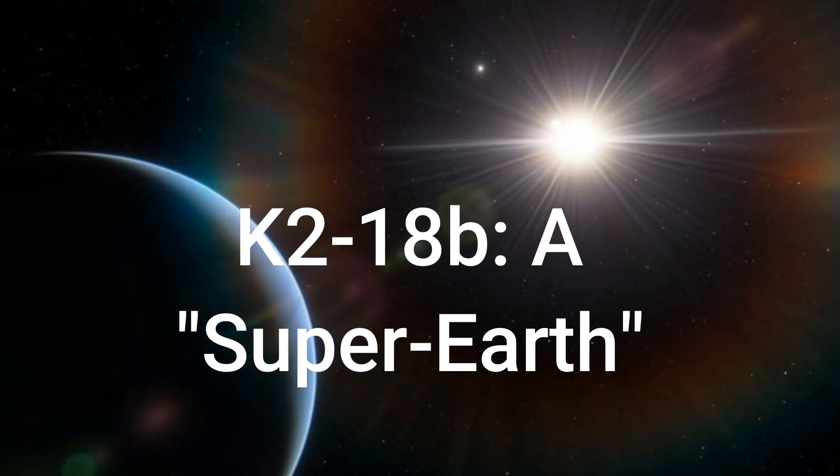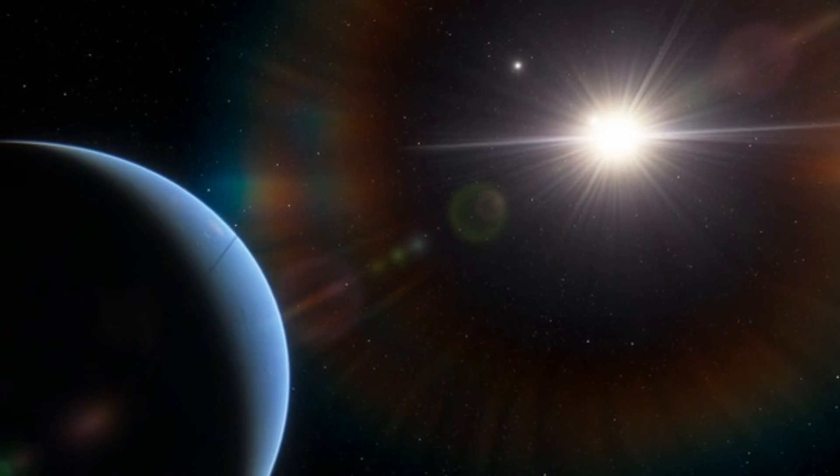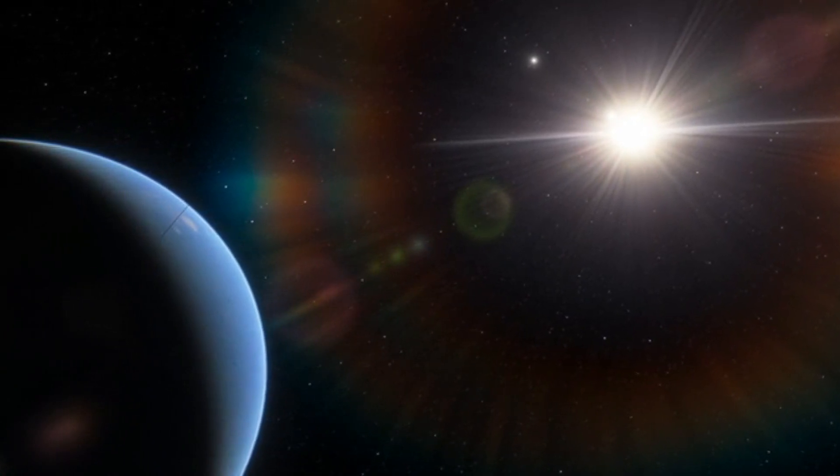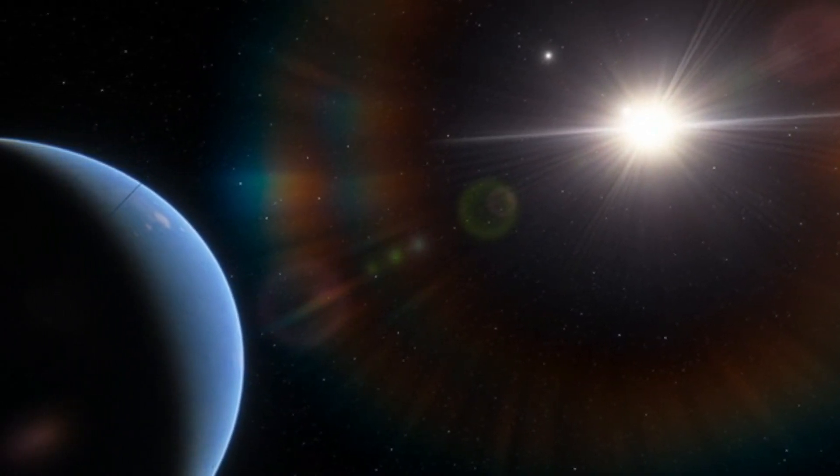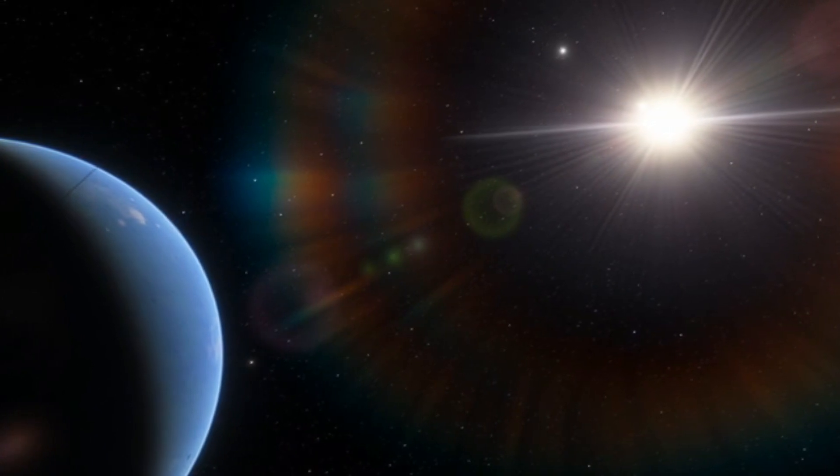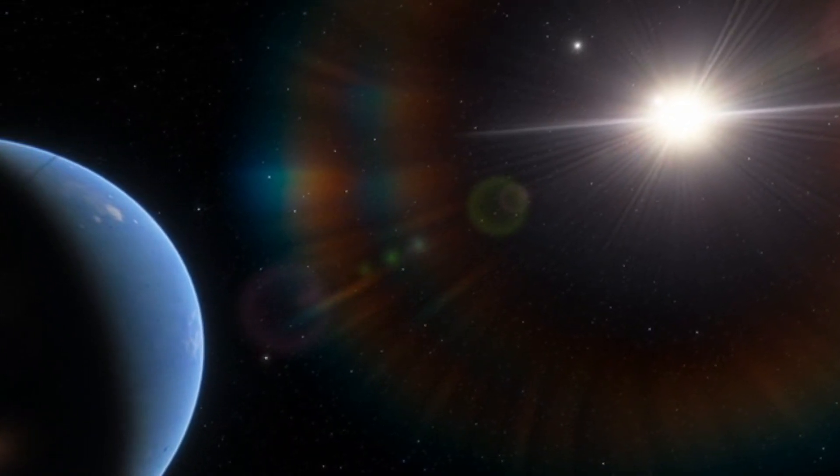K2-18b, discovered by NASA's Kepler mission and later confirmed by ground-based observations, orbits a red dwarf star approximately 124 light-years away in the constellation Leo.